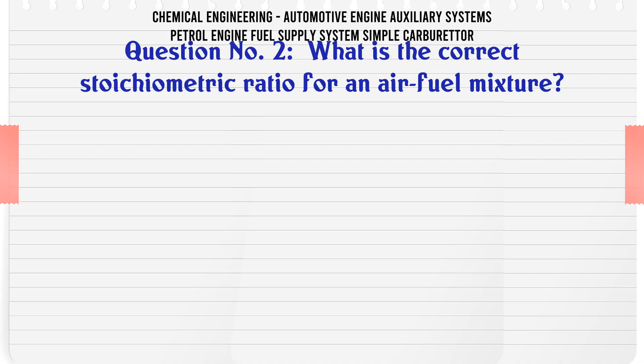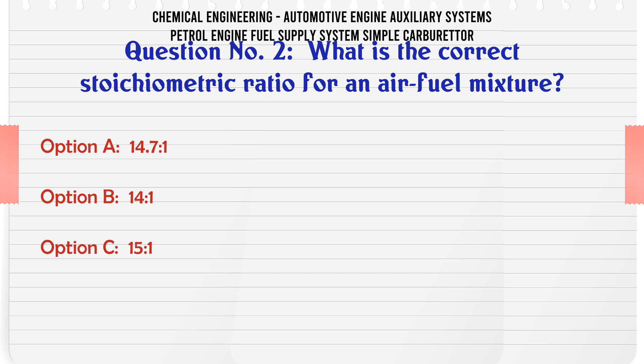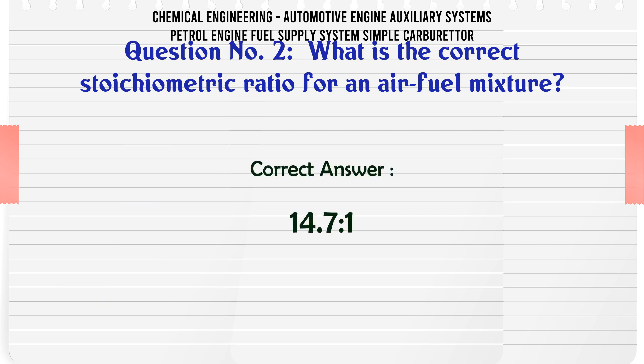What is the correct stoichiometric ratio for an air-fuel mixture? A. 14.7:1. B. 14:1. C. 15:1. D. 9:1. The correct answer is 14.7:1.